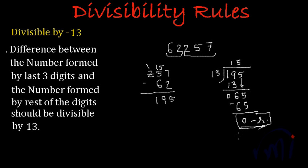And since we have got remainder as 0, this proves that 195 is divisible by 13. And according to this rule, this 195, which is actually the difference between the number formed by last three digits and rest of the digits, is divisible by 13, so this whole number should also be divisible by 13.